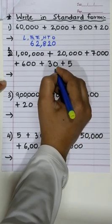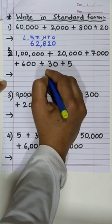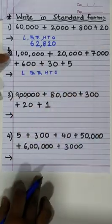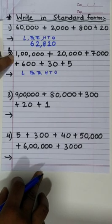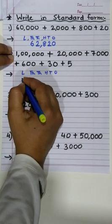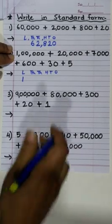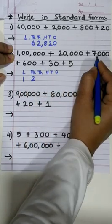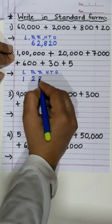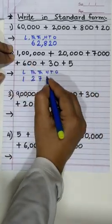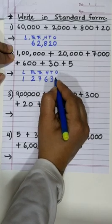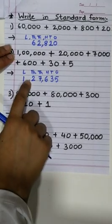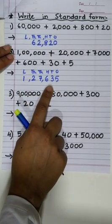Let's try one more. Of course, we'll write the periods first. Now the first number which we have is 1,00,000, so we'll write 1 under the lakhs column. Then we have 20,000, so under 10,000s we'll write 2. 7,000, so under thousands we'll write 7. 600, so under hundreds we'll write 6. 30 and 5. Easy? The number which we got is 1,27,635. Great!